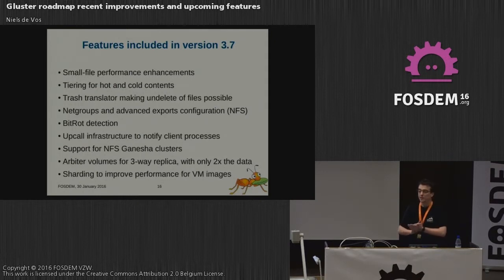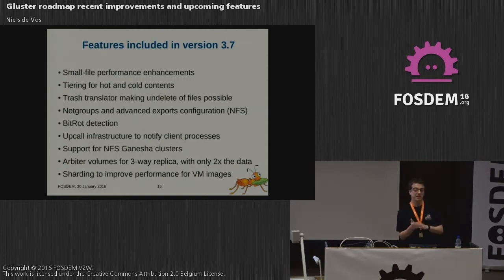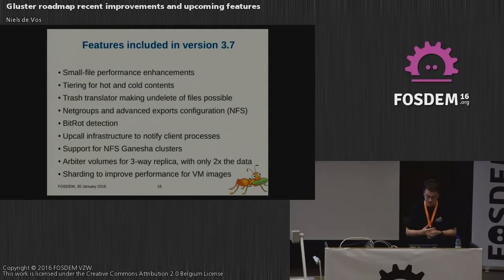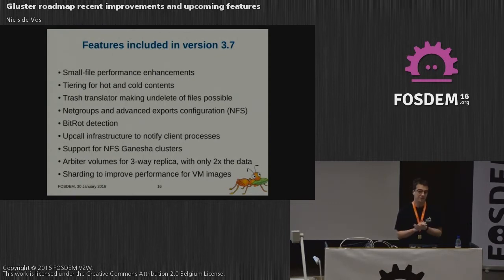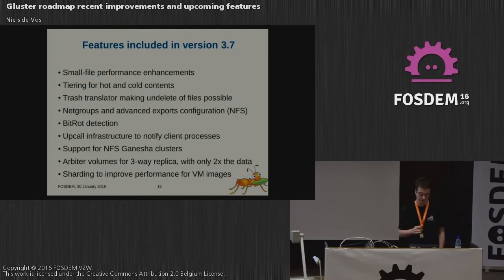We have an internal feature called the upcall framework. Upcall makes it possible to instruct cache invalidation to clients — if one client modifies data, we can instruct other clients to invalidate their caches. This is a very important feature for NFS-Ganesha, a user-space NFS server that requires this kind of functionality. Otherwise you would get stale data, stale file handles, or other weird errors from your NFS server.